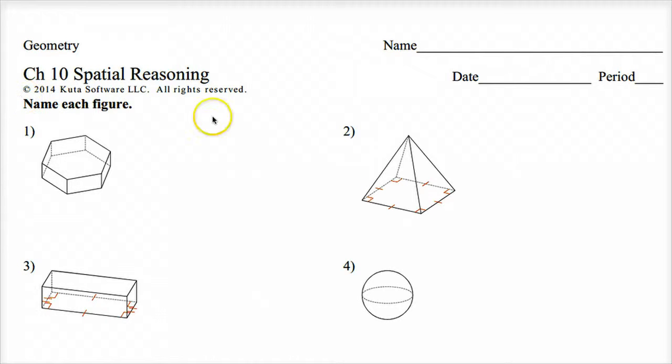Okay geometry, we are looking at Chapter 10 Spatial Reasoning and basically 3D shapes. So we're going to start out with this first short video looking at naming the shapes, but then in the second one we're going to look at how to calculate some of the stuff like the volume.